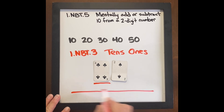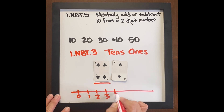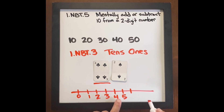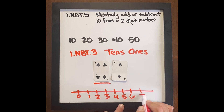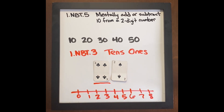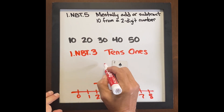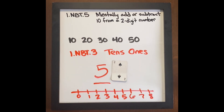Also, perhaps using a number line might be of help to some students — some students might not need it, some students might. Here we can see that 5 is 1 more; we're looking for neighbor numbers. So we had 4 tens, 2 ones. Now we're going to change this to 5 tens, 2 ones.